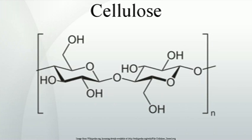Cellulose has no taste, is odorless, is hydrophilic with a contact angle of 20 to 30 degrees, is insoluble in water and most organic solvents, is chiral and is biodegradable. It can be broken down chemically into its glucose units by treating it with concentrated acids at high temperature. Cellulose is derived from D-glucose units, which condense through β-glycosidic bonds.